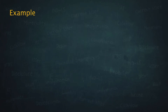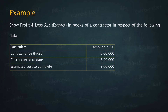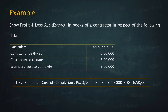Let us now look at another example. Show Payndale account extract in the books of contractor in respect of the following data. Contract price is fixed at 6 lakhs. Cost incurred to date is 3,90,000 and estimated cost to complete is 2,60,000. So, 3,90,000 plus 2,60,000 — the total estimated cost for completing the contract is 6,50,000.